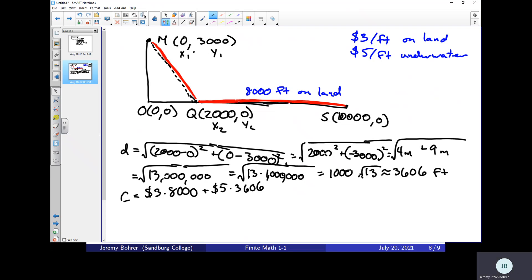Okay, well three times 8,000 is 24,000, plus 3,606 times five, which is 18,030. Add those together and I get 24,000 plus 18,000 is going to be 42,000 and 30 dollars.